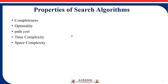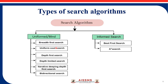These are the properties of a search algorithm: completeness, optimality, path cost, time complexity, and space complexity.